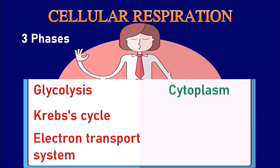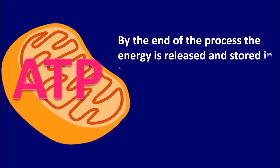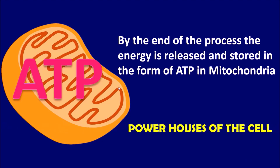Glycolysis takes place in the cytoplasm, whereas the Krebs cycle and electron transport system take place in the mitochondria. By the end of the process, energy is released and stored in the form of ATP in mitochondria. Hence, mitochondria are known as the powerhouses of the cell.